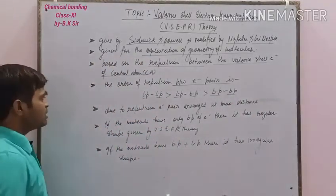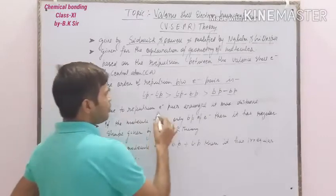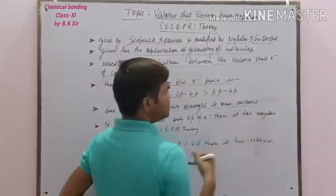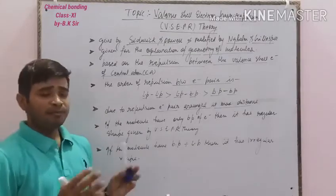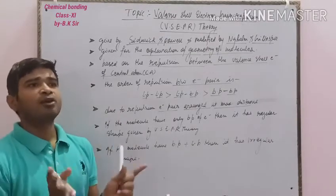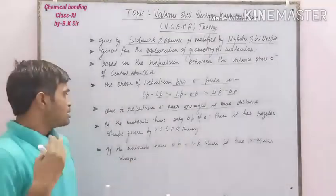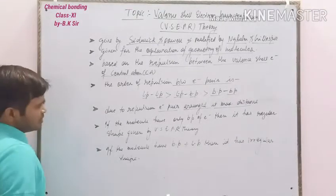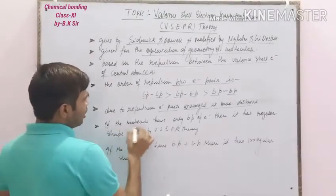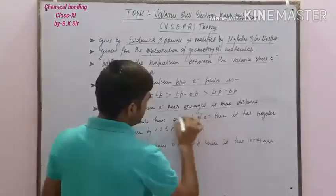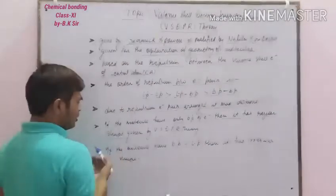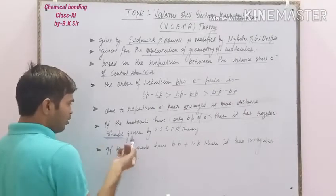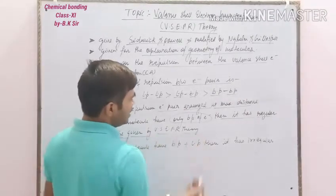Next point of this theory: due to repulsion, the electron pairs arrange at maximum distance so that the minimum force of repulsion between the electron pairs takes place. If the molecule has only bond pair electrons, then it has a regular symmetry of shape given by VSEPR theory.